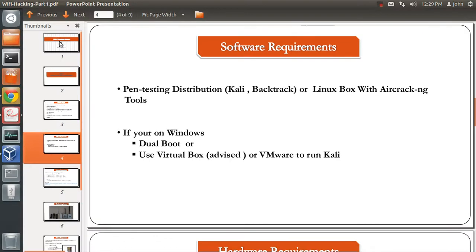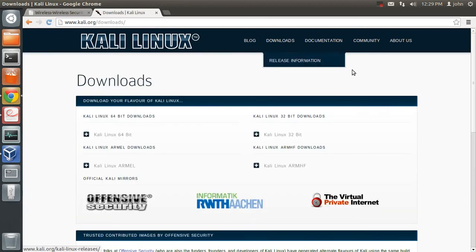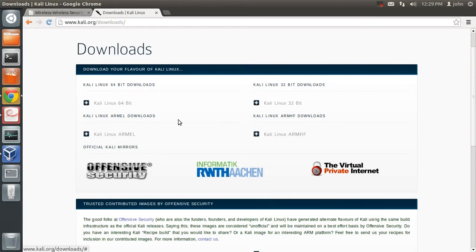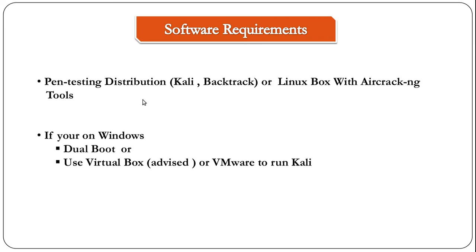So you just go to kali.org and go to the download section. You can just download the one that suits your needs — either the Kali Linux 64-bit or the Kali Linux 32-bit operating system. You can install that on your laptop or desktop machine. If you are on Windows, you can dual boot, or you can install Kali on VirtualBox or VMware.